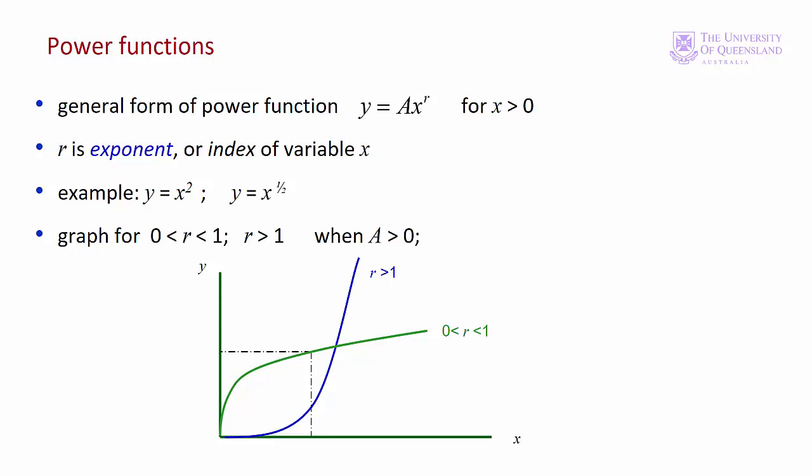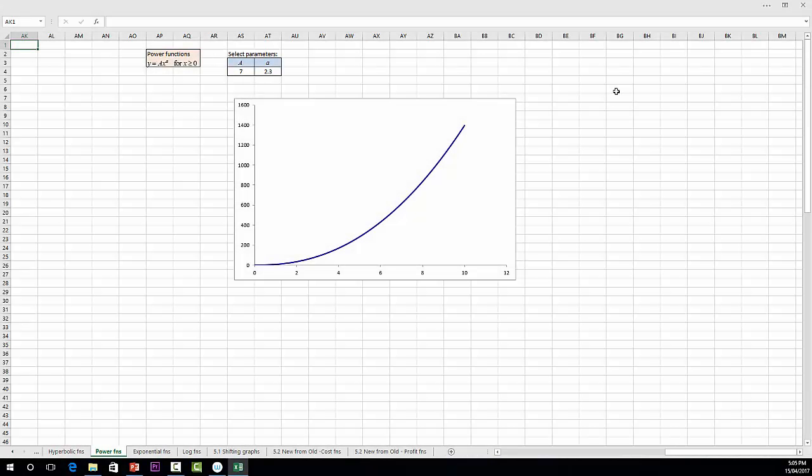Typical shapes of the graph are these. First for r between 0 and 1, the function increases steeply at low values and then flattens out. For values of r greater than 1, the function increases slowly and then the slope becomes much steeper. You'll see how changes to the parameters of our power function affect the graph by going to Excel.